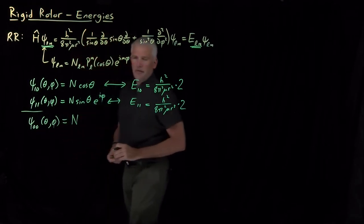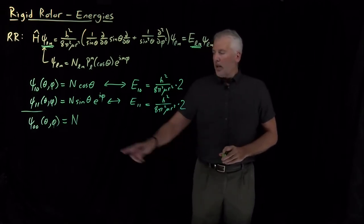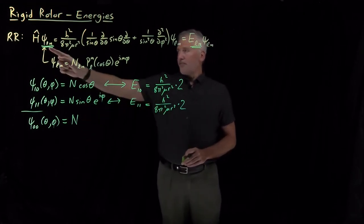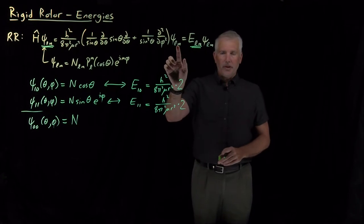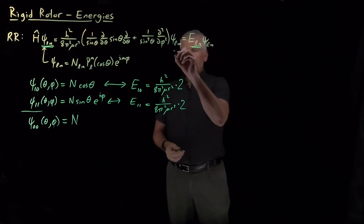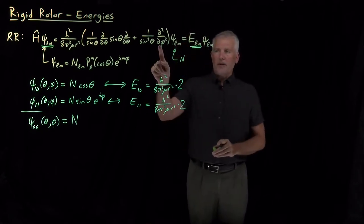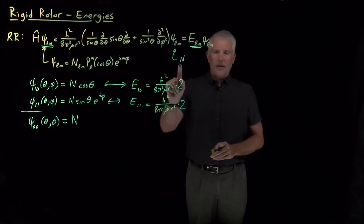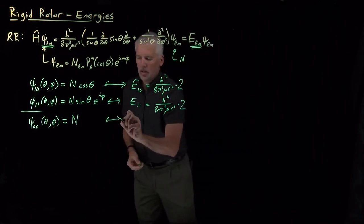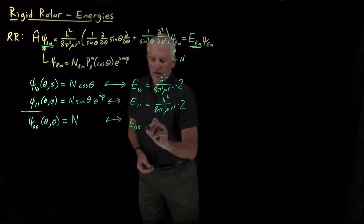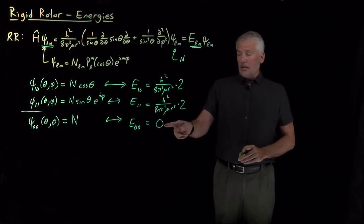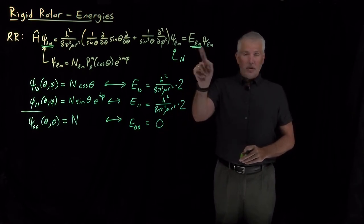The simplest of the wave functions is the 0,0 wave function, and that wave function is just a constant. If I insert the constant, a normalization constant for the wave function, if I take these derivatives of that wave function, then I'll get back a constant times that wave function. In fact, those derivatives are not hard to do. If this is just a constant N, when I take the phi derivative of the constant, I get 0. When I take the theta derivative of the constant, I get 0. So, everything inside parentheses here is just 0. So, the energy of the 0,0 wave function is just 0. That is a constant times the wave function. The constant is 0 times the wave function.